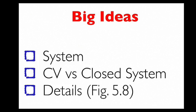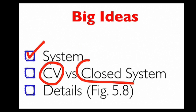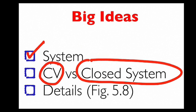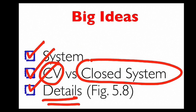Three big ideas to leave you with. First, as an engineer, always be methodical in selecting your system to define exactly what you want to analyze. Second, there are two basic approaches: idealize your system as a closed system, or select a control volume. Third, a control volume can be either constant volume or deforming, and there are four types of closed systems. All these details are summarized in figure 5.8.